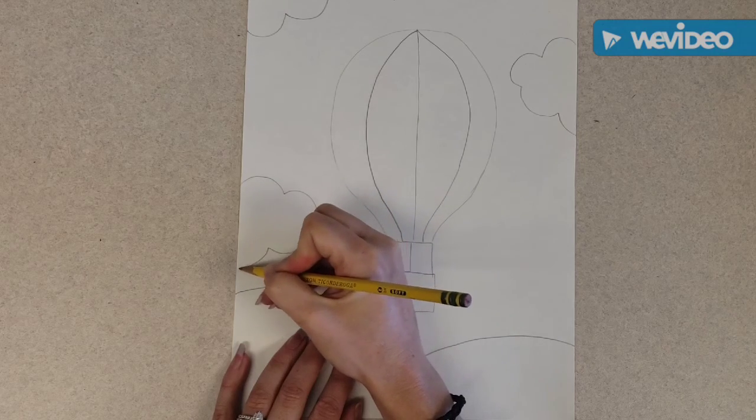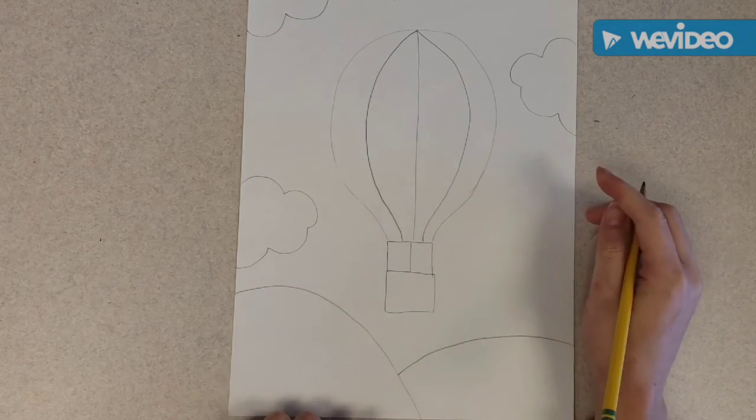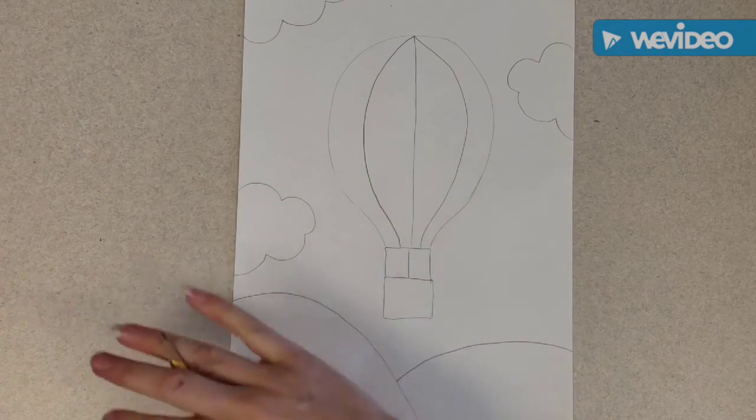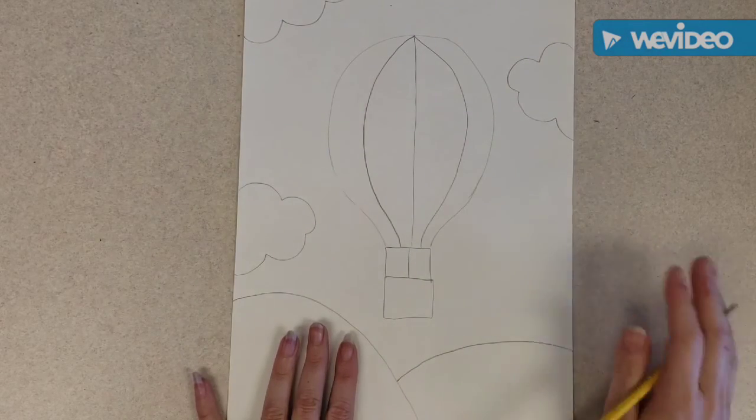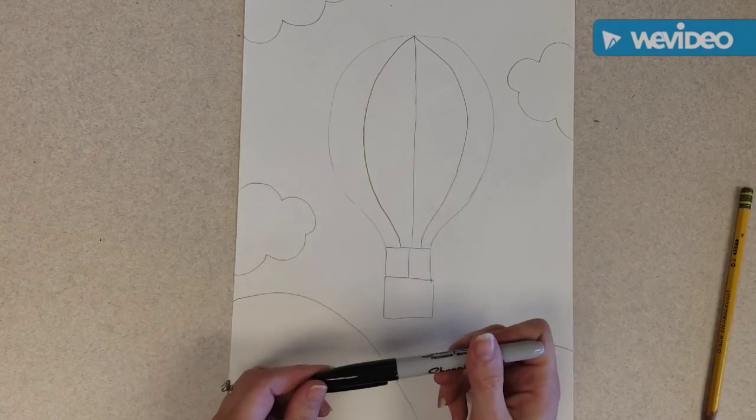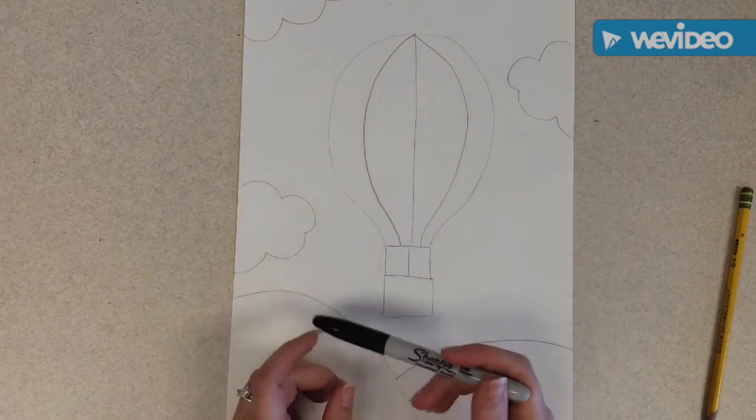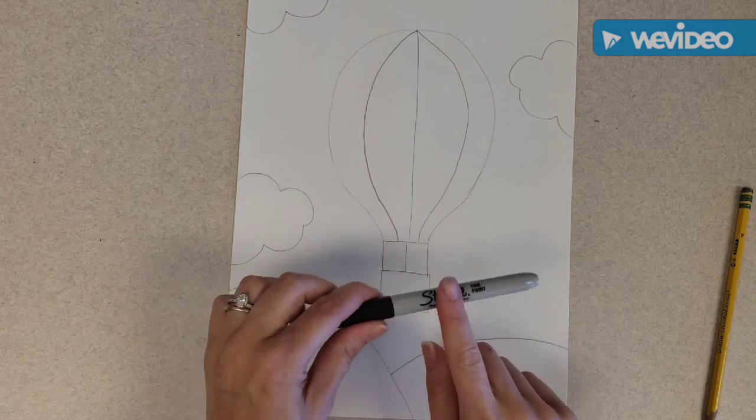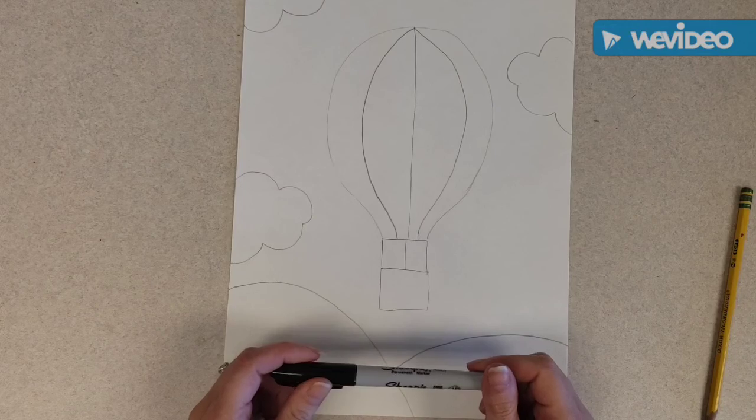Your paper will not look exactly like mine and that is okay. It is your art and it is beautiful. Once we get a drawing that we like and we think we're done with, we don't have to erase anything else. You're going to take a Sharpie and you're going to Sharpie every line on the front of your paper. Every line that you want to keep is going to get traced in Sharpie.